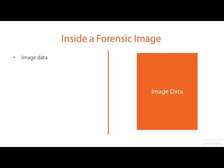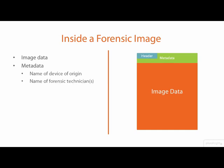Forensic image files have the ability to not only store a bit-copied image of a file or digital media storage device, but also store additional information associated with the acquired digital evidence. This information, known as metadata, contains descriptive information about the evidence, such as the name of the device the image was acquired from, the name of the technician who acquired the image, the time and date of the acquisition, and the case number the image is a part of. Metadata should always be stored with its forensic image in such a way that it cannot be separated from, but also cannot be confused with, the original information.